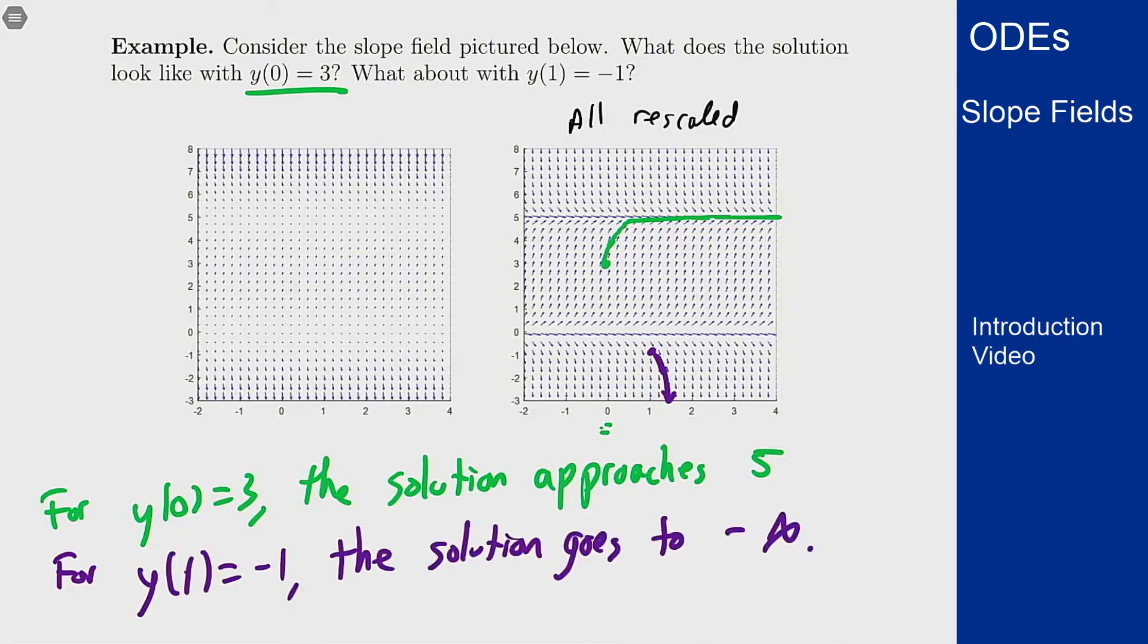The slope fields are nice because they give us information in pictorial form and it's pretty easy to make these and then use them to analyze what's going to happen with a differential equation over time just based on what the arrows look like and how the slope field behaves. So that's the idea of a general first order equation, how we can use slope fields to visualize and analyze these equations and what they're going to do over time.